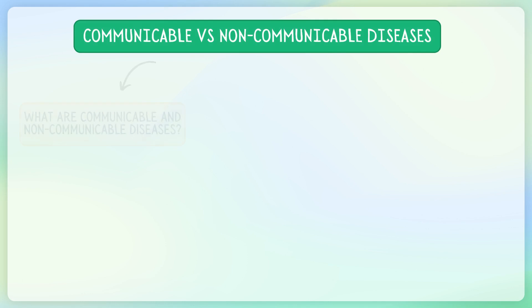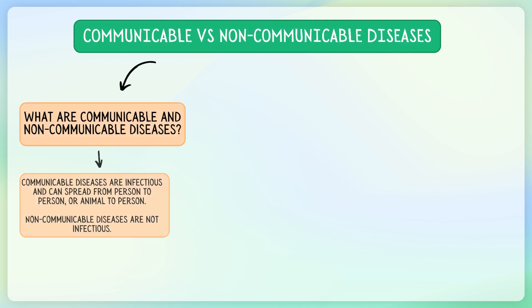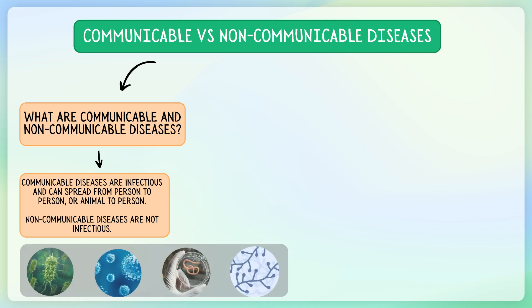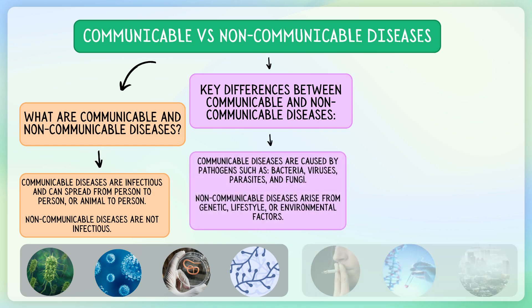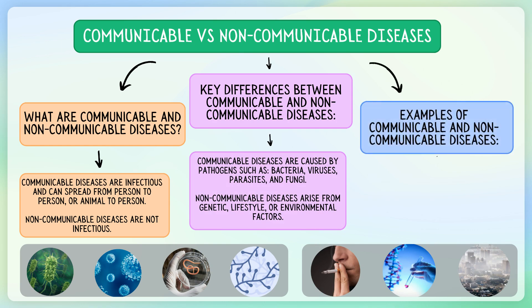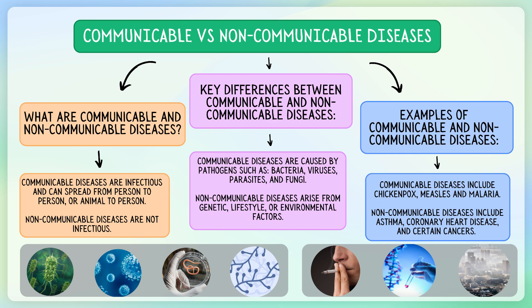In summary, communicable diseases are infectious and can spread from person to person or animal to person, caused by pathogens like bacteria, viruses, parasites and fungi. Non-communicable diseases are not infectious and arise from genetic, lifestyle or environmental factors, with examples including asthma, coronary heart disease and cancers. Understanding these distinctions helps us better grasp the varied approaches to preventing, managing and treating these diseases to maintain overall health and wellbeing.